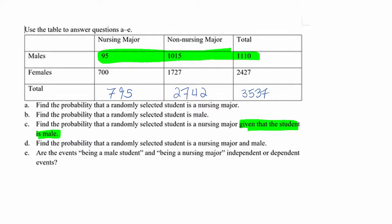Whenever we solve C, the bottom will be 1110, and then among this number we are finding nursing majors, which is 95. So if you simplify as a decimal...